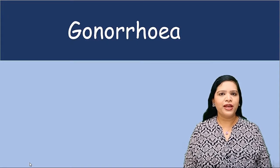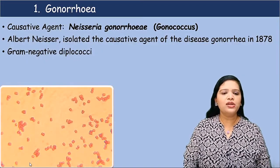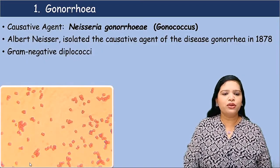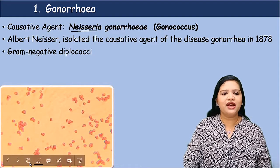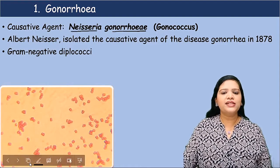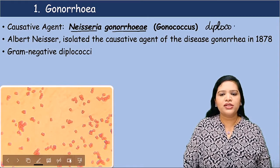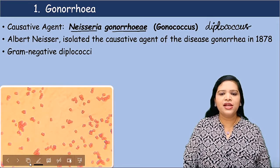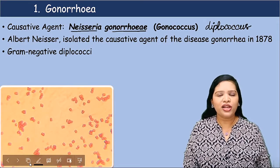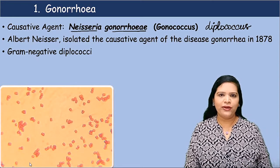What is gonorrhea? This is caused by the bacteria — the causative agent for gonorrhea is Neisseria gonorrhoeae. This is also called as gonococcus or diplococcus. So diplococcus, gonococcus, Neisseria gonorrhoeae all indicate the same organism.